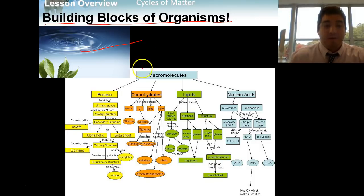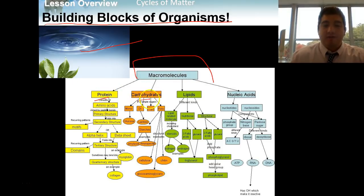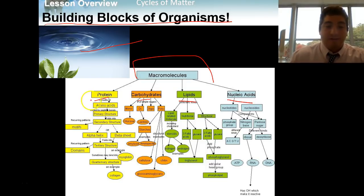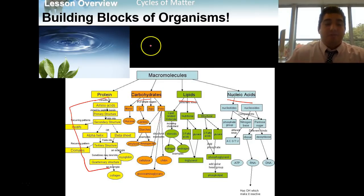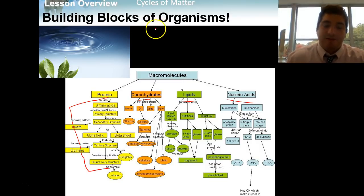For all life on earth, there are a couple crucial things for life to take place. One of them is water — we can't have organisms if we don't have water. And another big one, our favorite, the macromolecules: proteins, carbohydrates, lipids, and nucleic acids. These four macromolecules can all be broken down into monomers. So the building blocks of organisms — water, macromolecules — are based on basic elements of matter.